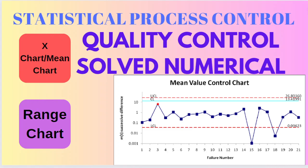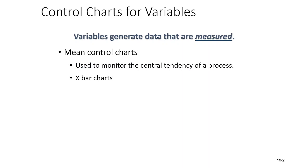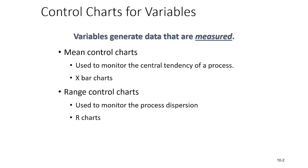Hello friends. In today's video we will be discussing quality control numericals. As a first part we will be discussing numericals related to control charts for variables. There are two types of charts: mean control charts and range control charts. Variables are data which we can actually measure, and for that we have two types of charts — the mean chart, also known as the x-bar chart, and the range chart, known as the R chart.